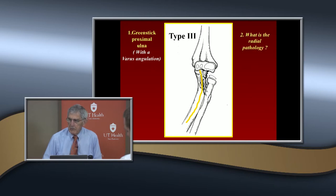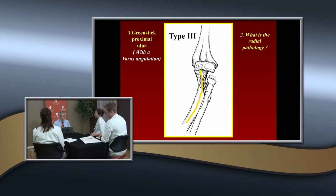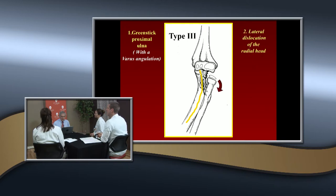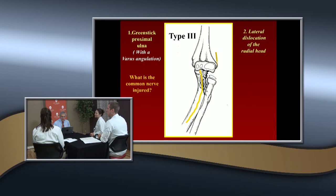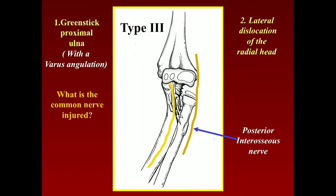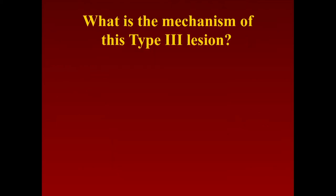What's the pathology of the radius? It is displaced laterally, or sometimes anterior laterally. And that produces a third problem — what is the radial head pushing against? The posterior interosseous nerve. This is one in which there's a high incidence of nerve injuries. You don't see nerve injuries much in types 1 and 2, but it's not uncommon to see posterior interosseous nerve injury in type 3.